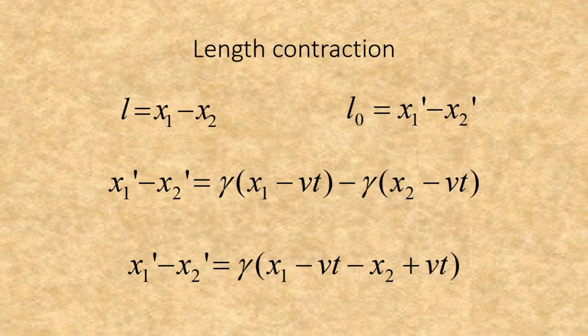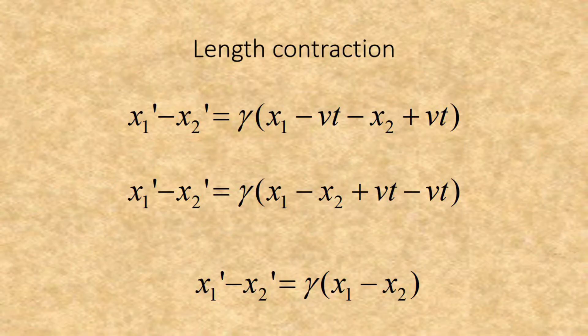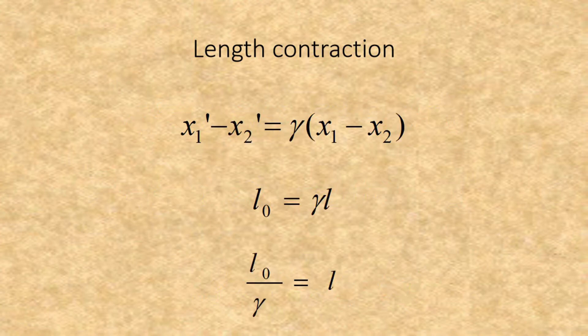Length contraction is dealing with the distance between two points. So we start out with x1 prime minus x2 prime equals gamma times x1 minus vt minus gamma times x2 minus vt. It then simplifies, resulting in x1 prime minus x2 prime equals gamma times x1 minus vt minus x2 plus vt. The vt terms cancel out, resulting in x1 prime minus x2 prime equals gamma times x1 minus x2.